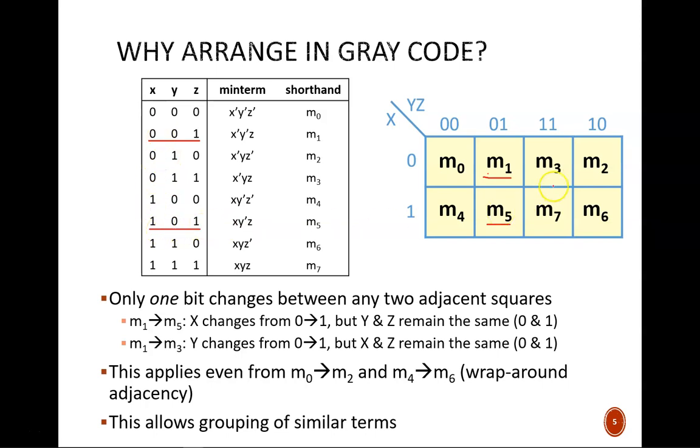If we move down from there, minterm 5 has the input code of 101. So, the X value changes, but Y and Z remain the same. Similarly, if we move to the right, minterm 3 has the input code of 011. Here, the Y value changes, but X and Z remain the same. This applies even to squares on opposite edges of the map. Between m0 and m2, only one bit changes. And the same is true between m4 and m6. This is called wrap around adjacency.